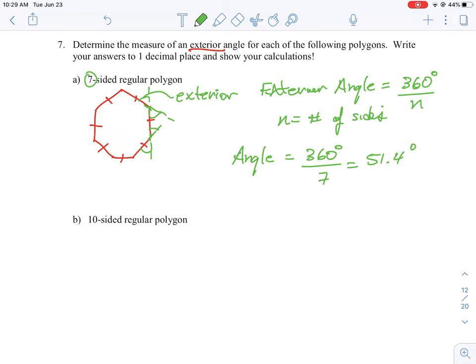So if we were to measure those angles against the side, against a line that goes straight from the adjacent side, the outside angle is equal to 51.4 degrees.